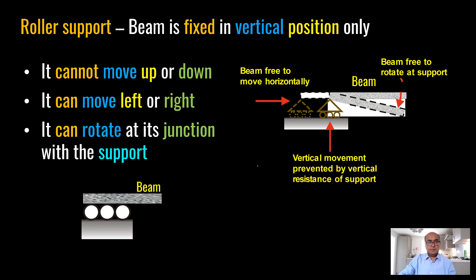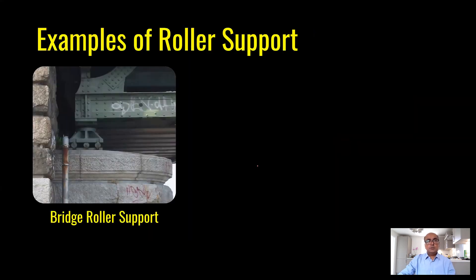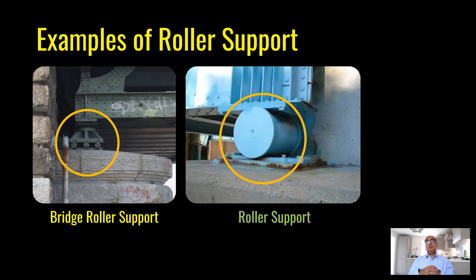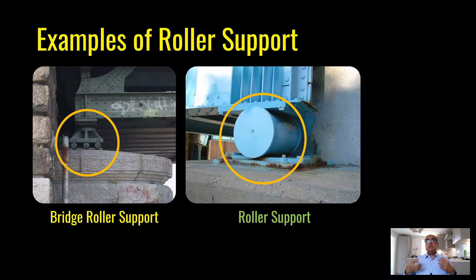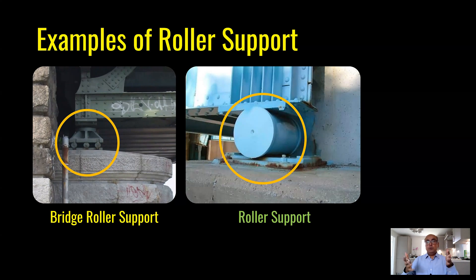Roller supports are graphically represented with a triangle and small circles. They are mainly used in bridges where, if one joint is pinned, the other is a roller — primarily to allow for thermal expansion. Steel members expand when heated and contract when cold. Using a roller support prevents stresses from being trapped inside members by allowing horizontal movement.